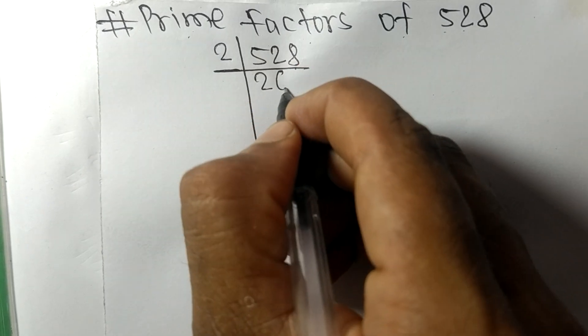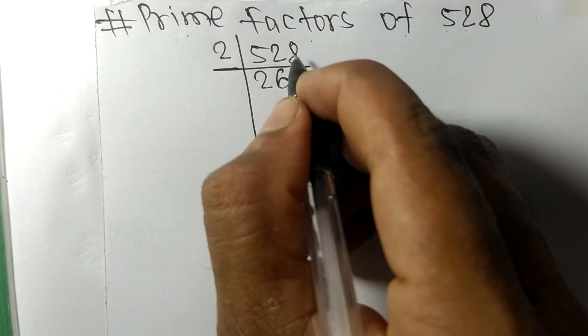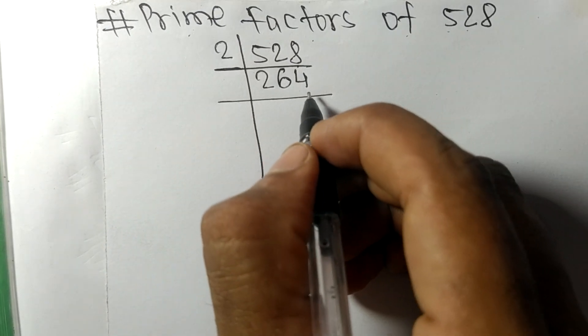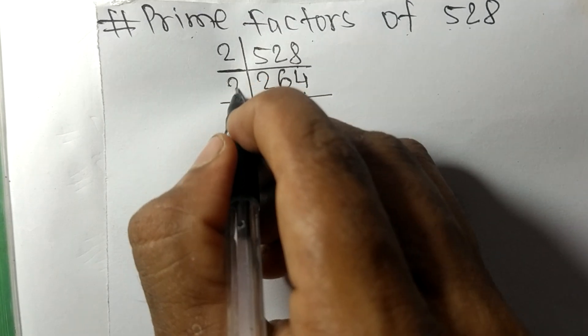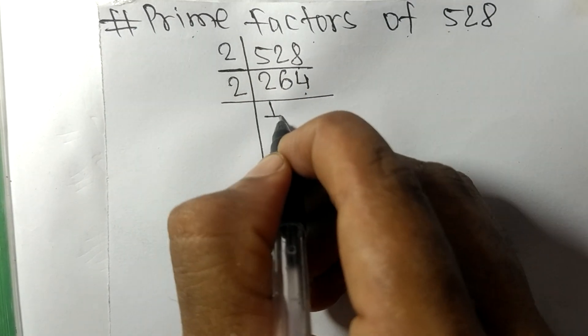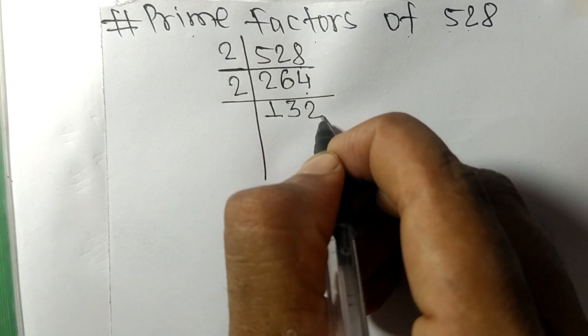So it is divisible by 2. 2 times 1 is 2, 2 times 3 is 6, 2 times 2 is 4. We get 132, which again has an even number 2 at last, so it is divisible by 2. 2 times 6 is 12, remainder 1, bring down to 12. 2 times 6 is 12.